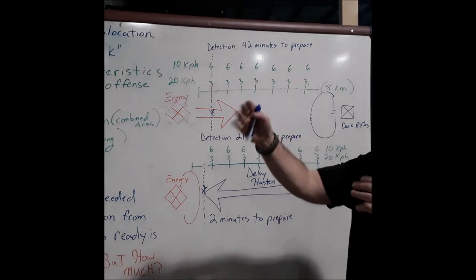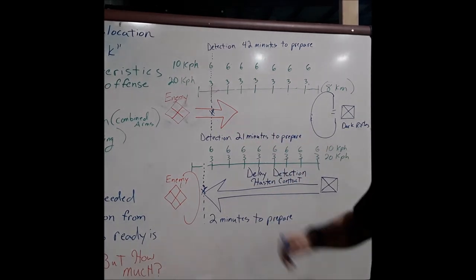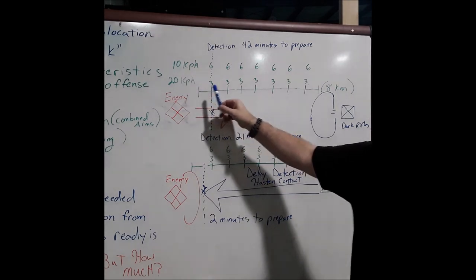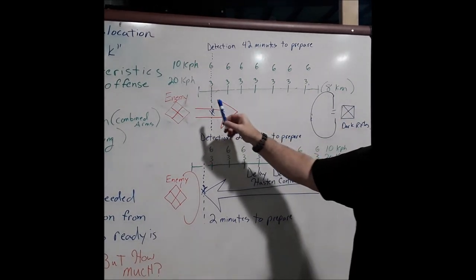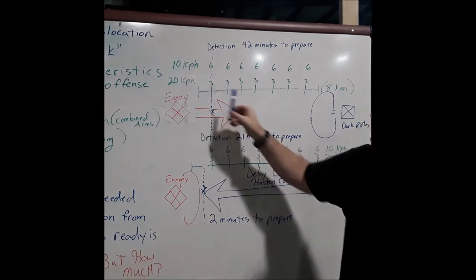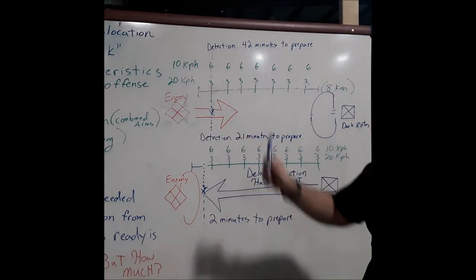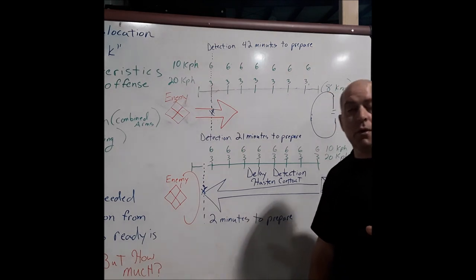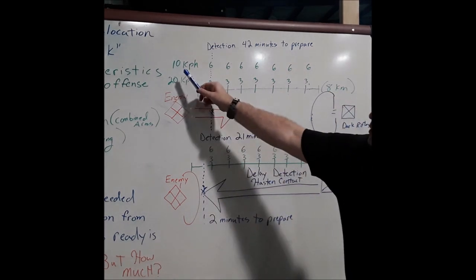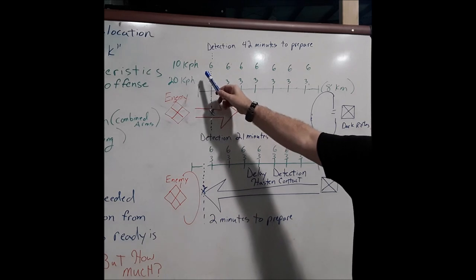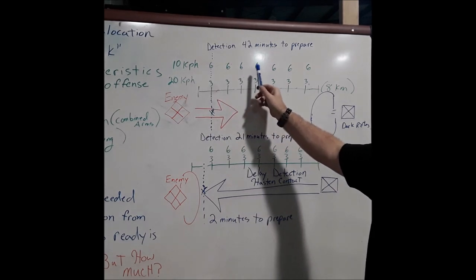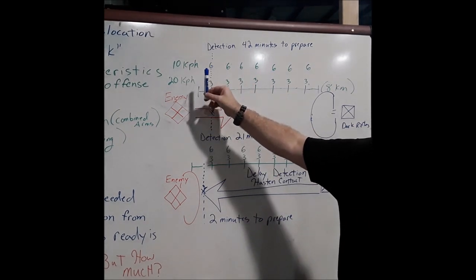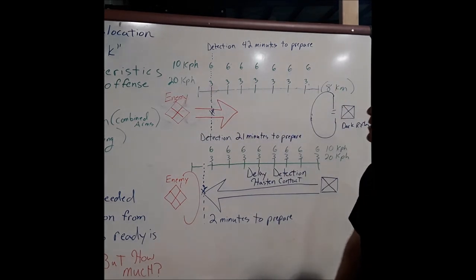Just for simplicity, if the enemy is moving at 20 kilometers per hour, and we're separated by eight kilometers, the enemy would be upon us in about 24 minutes — at 20 kph, every kilometer takes three minutes. Maybe we're able to slow them down to a more sluggish 10 kilometers per hour, meaning every kilometer takes six minutes. Therefore from eight kilometers out, it would take them 48 minutes.